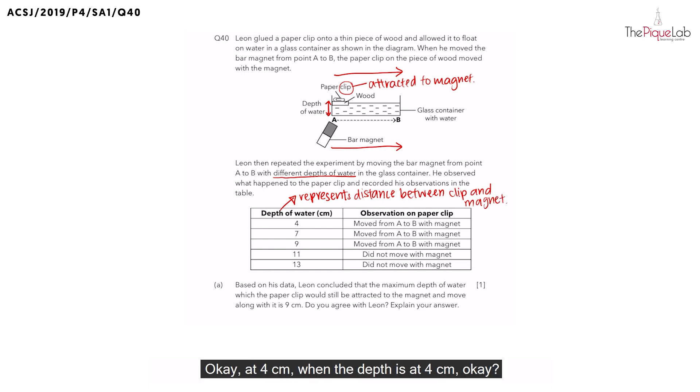Okay, and then we look at the results. At 4 cm, when the depth is at 4 cm, the paperclip still moved together with the bar magnet. That means the paperclip is still attracted. Same thing for 7 cm. And then finally at 9 cm, the paperclip still moved together with the bar magnet. So from 4 to 9 cm, we can say that the paperclip was attracted.